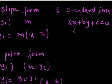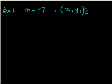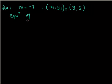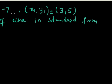Now we'll see how to approach a question if some information is given about the equation. Suppose you have a question which says the value of m is minus 7 and you have a point x1 y1 which is 3 and 5. How will you write the equation of a line? Write the equation of the line in standard form. Since a point and a slope are given, I'll use the point-slope form.